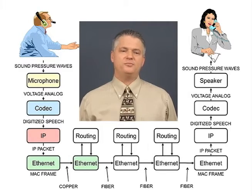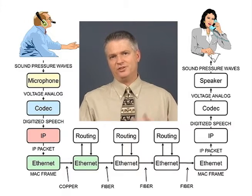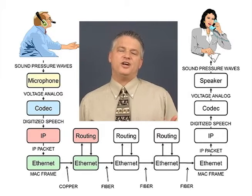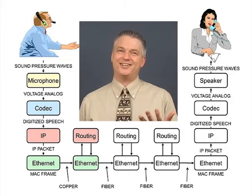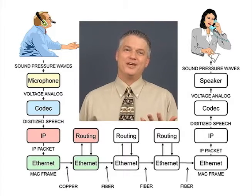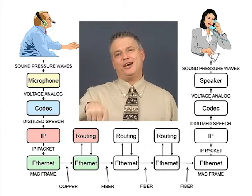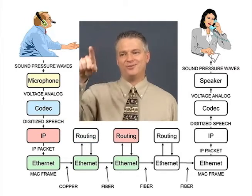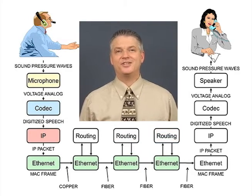At every intermediate node, every router in the network, it pulls in the frame, extracts the packet, looks at the IP address or possibly an MPLS label — which we'll certainly discuss later — makes a routing decision, puts the packet back in a frame and sends it on its way. So it goes up into the routing software and down into the LAN software at every one of these nodes.